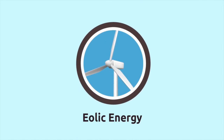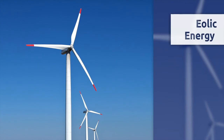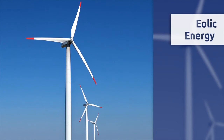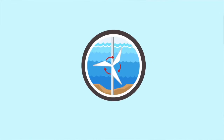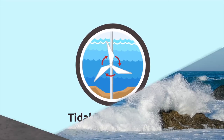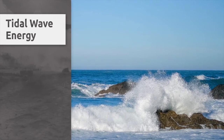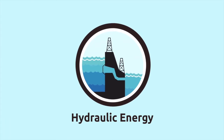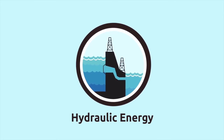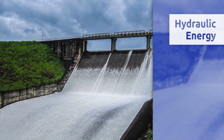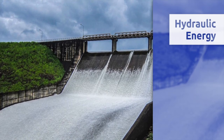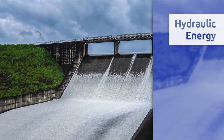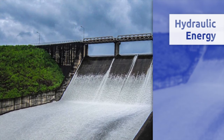Eolic energy comes from the movement of air or the wind. For example, these windmills transform wind into electric energy. Tidal wave energy comes from the movement of sea waves, or when tides change from high to low and vice versa. Hydraulic energy is produced by the water we store in reservoirs or artificial lakes. Look at this dam — water falls over from a high spot, then flows through the hydroelectric factory where the force of the water is transformed into electric energy.